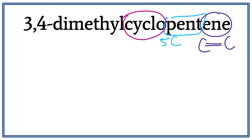When we see the word cyclo, this means that the longest carbon chain is arranged in a ring. Every time you see the word cyclo, you have to draw a ring.